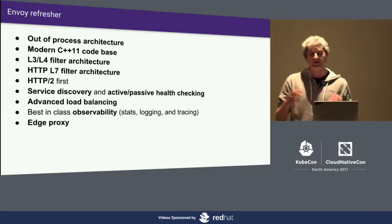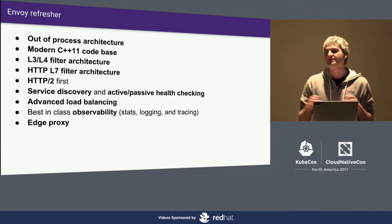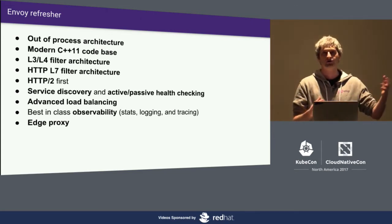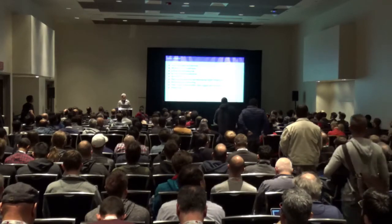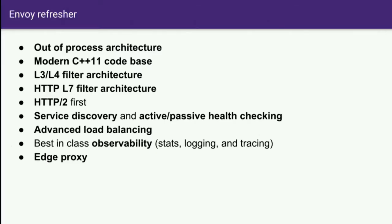All internet services typically have some type of edge proxy. What you see today is that people deploy different proxies for their internal services as well as for their edge — Nginx for the edge, or HAProxy for internal proxies. From an operational perspective, 99% or more of what these proxies do is the same: service discovery, timeouts, rate limiting, circuit breaking. Running the same software on the edge and on your internal service-to-service network has huge operational gains. Less software you can run, less software you have to understand.